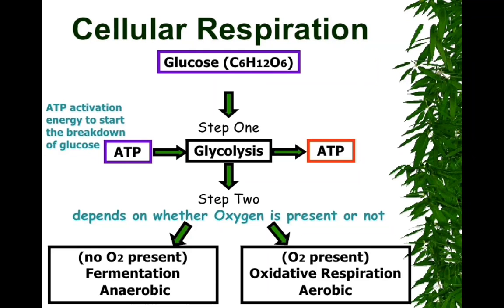Now you can see on the screen: step one, glycolysis. The left-hand side shows ATP input, and the right-hand side also shows ATP output. That means ATP provides the activation energy to start the breakdown of glucose. Whenever we start any process inside the body, a starting energy is required. Enzymes reduce the activation energy required, so that by consuming a little bit of energy, we can carry on with the process. The main product required after the breakdown of glucose is ATP once again. We need to initiate with ATP as activation energy, and when the process ends, we get ATP as the currency of energy.